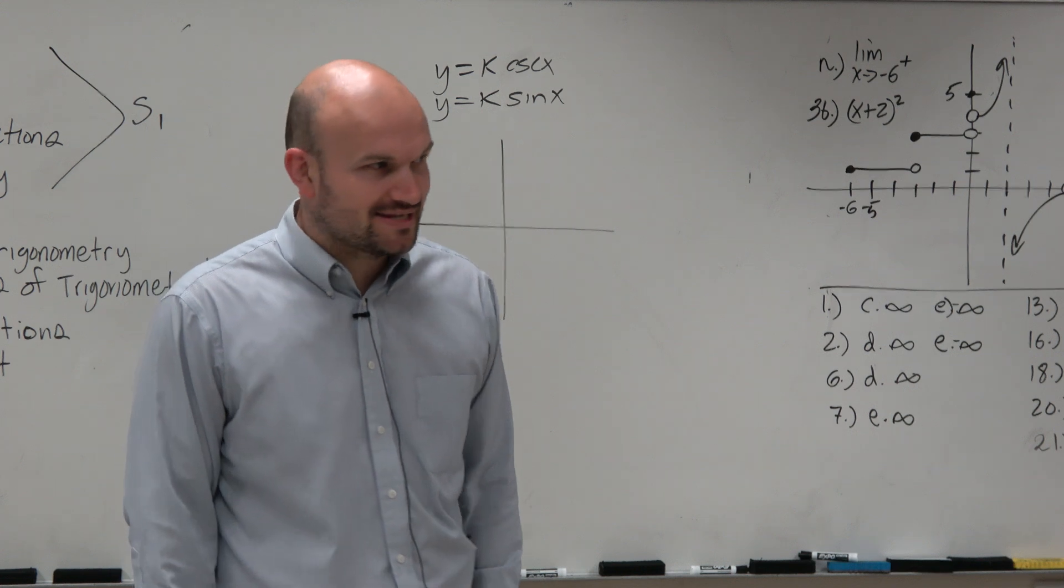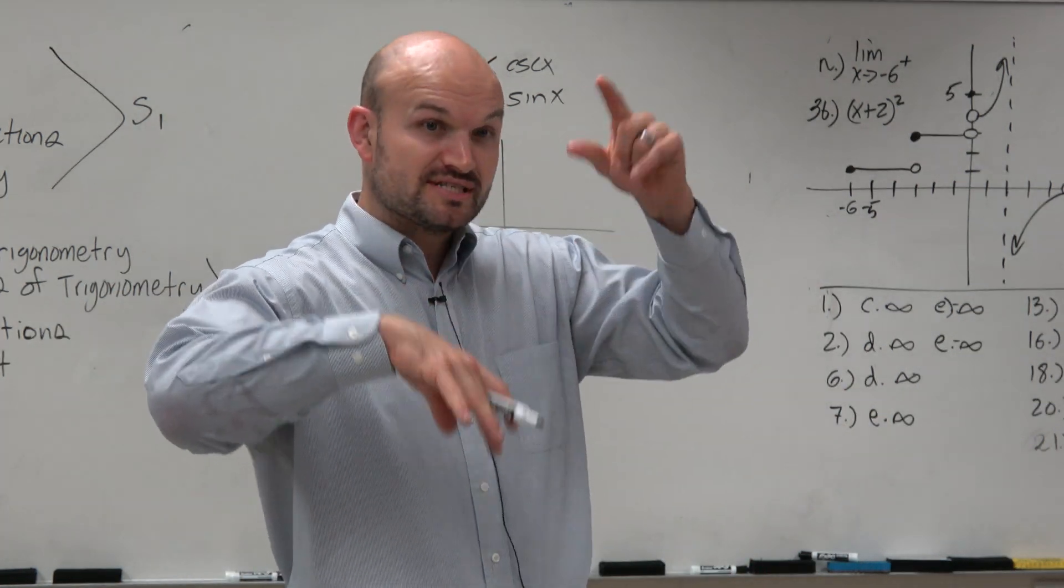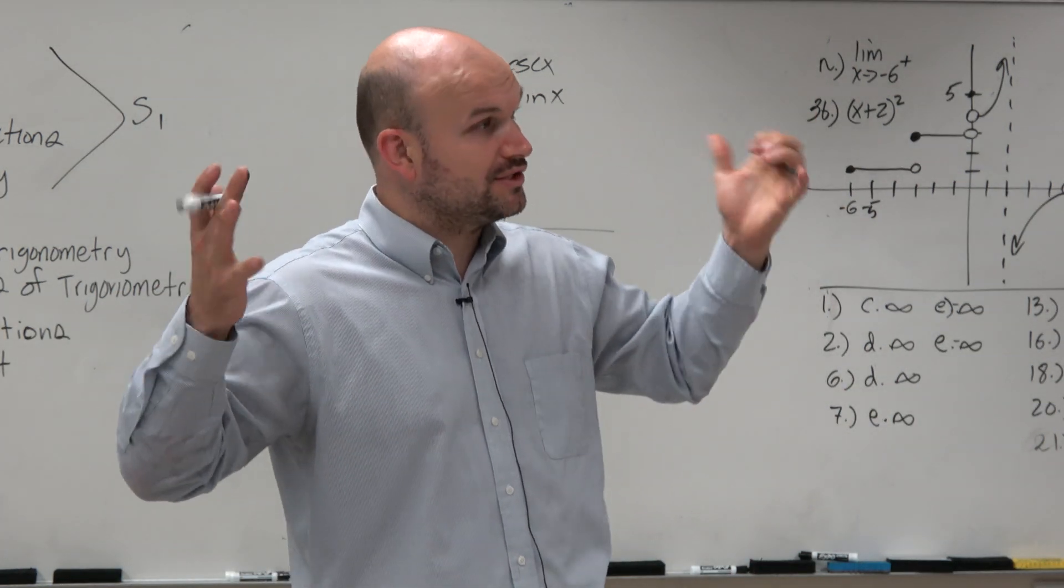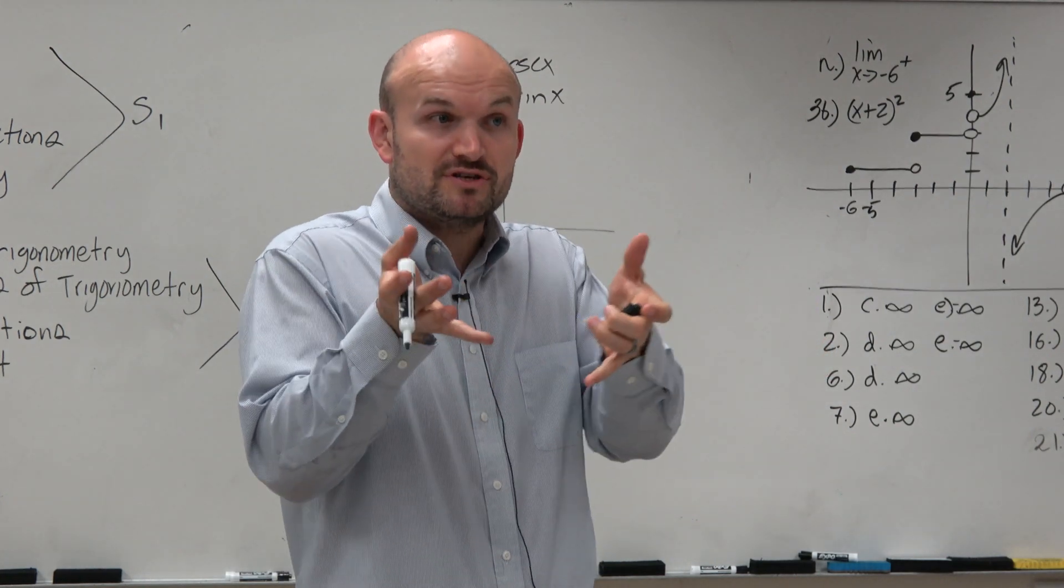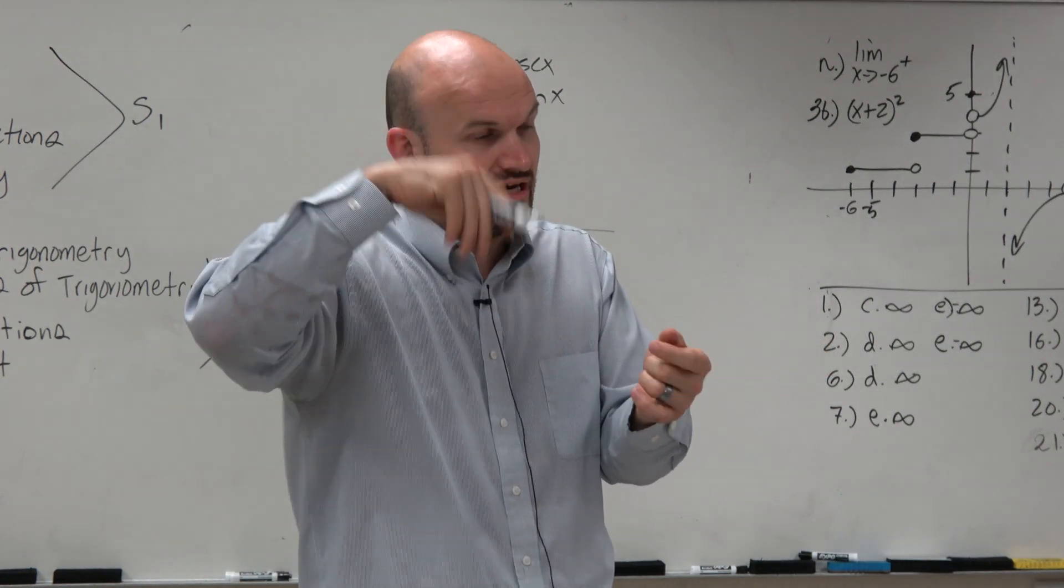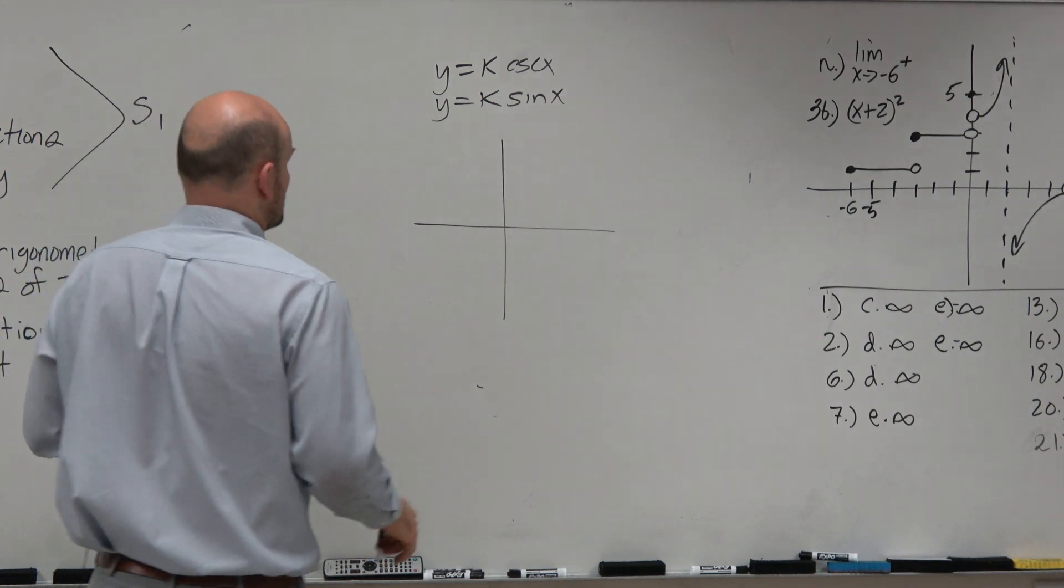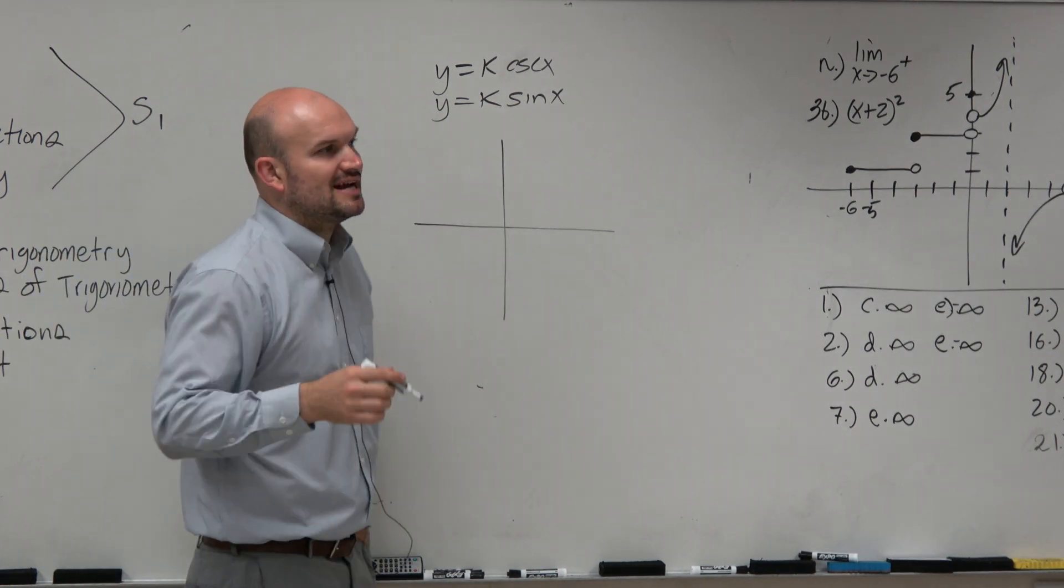So we have y equals sine of x. Now, just remember, they're reciprocals of each other. If you remember, when we learned how to graph cosecant and secant, we first graphed the sine and the cosine, and then we just flipped them to find the graphs and define the asymptotes. So let's graph sine of x.